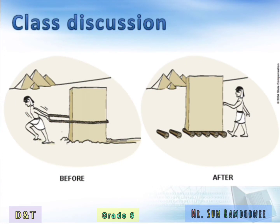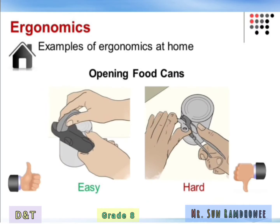The third picture shows a before and after. In the before picture, we can see that the person has to put a lot of effort to drag a heavy block. On the contrary, in the after picture, we can see that the person can easily push that heavy block.